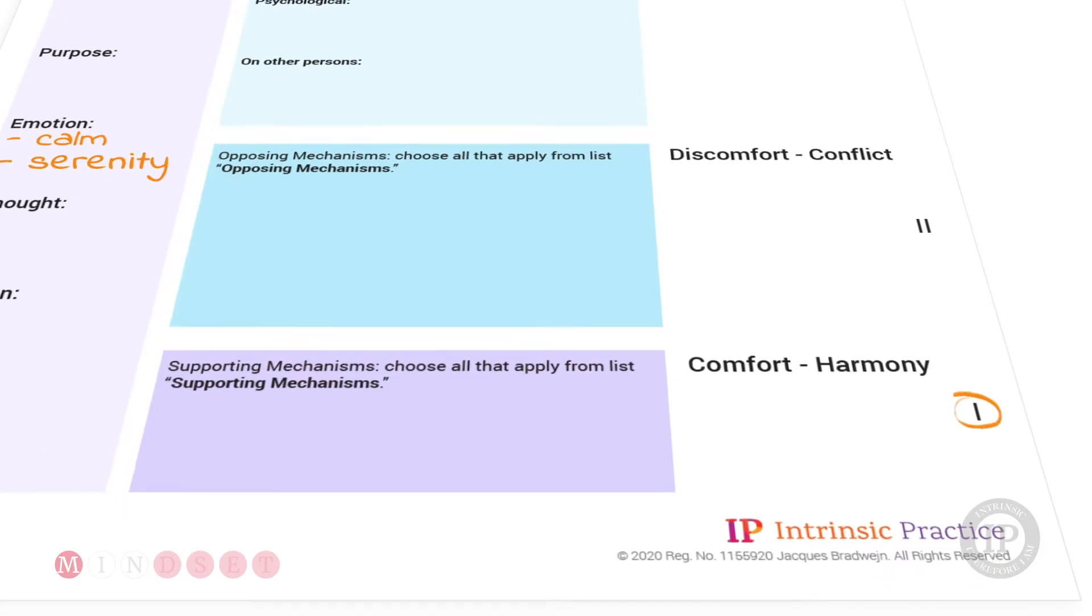So at level one, when using a supporting mechanism such as accepting or embracing or letting be or even holding, the emotion would be like saying that I am calm or serene, I have calmness or serenity.